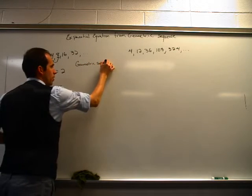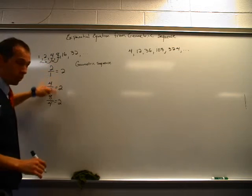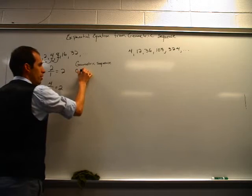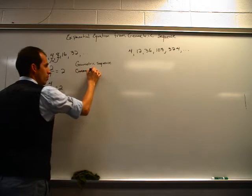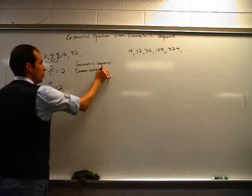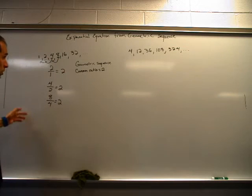All right, but also, what you can tell is we're multiplying by 2 every time. We're doubling. So we would call this the common ratio. The common ratio would then be 2. The common ratio is 2. We're doubling it every time.